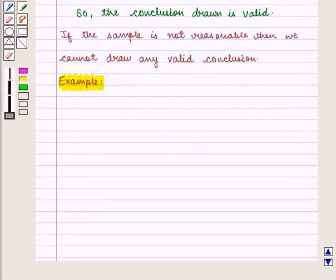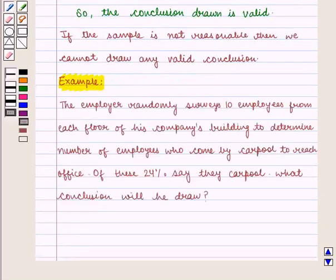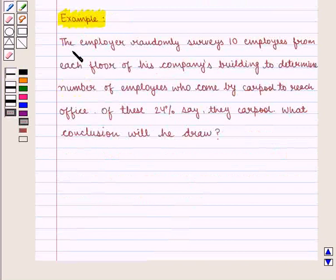Let us consider one more example. The employer randomly surveys 10 employees from each floor of his company's building to determine number of employees who come by carpool to reach office. If these 24% say they carpool, what conclusion will be drawn?